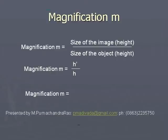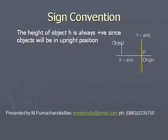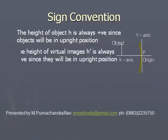The relation for magnification also equals −V/U. By substituting the values of U and V, you get m = H'/H = −V/U. The height of the object is always taken as positive because it is in the upright position, which is the positive direction of the y-axis.